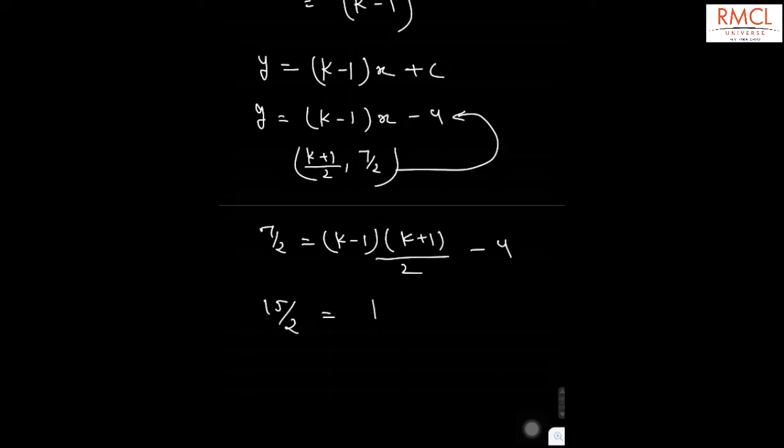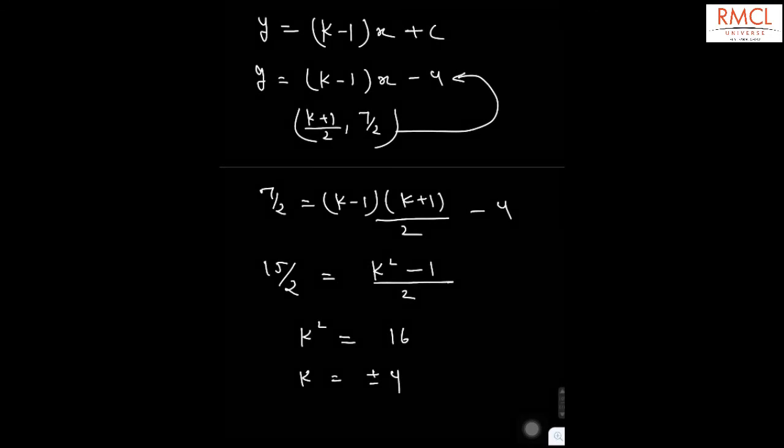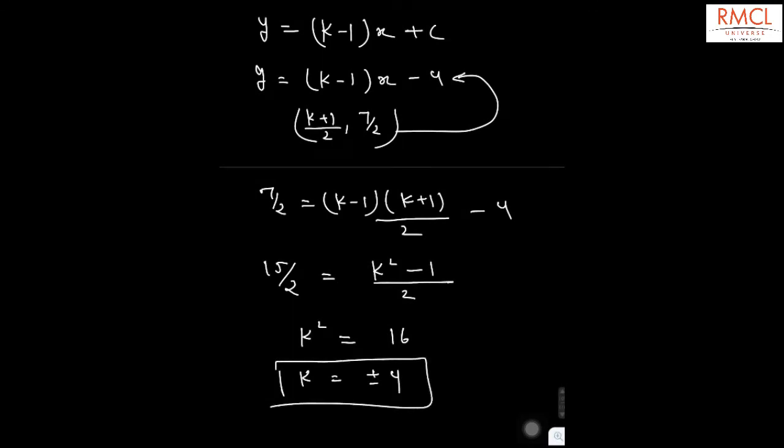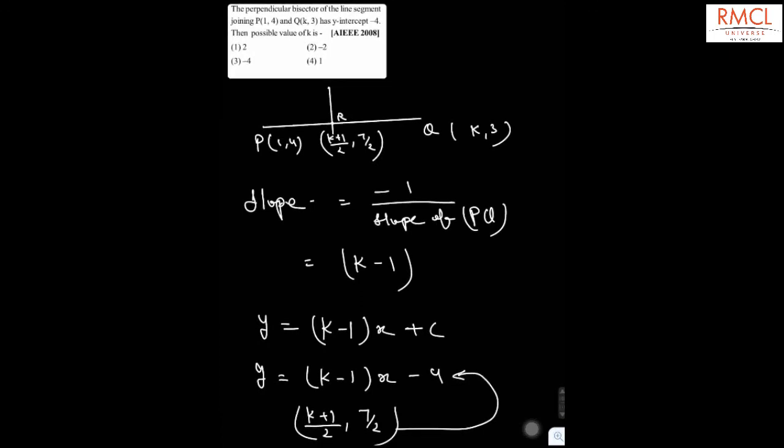Solving this, k squared equals 16, so the value of k will be plus or minus 4. If the value of k is plus or minus 4, then in the options the possible value of k is minus 4, that is option number 3. So option number 3 is correct.